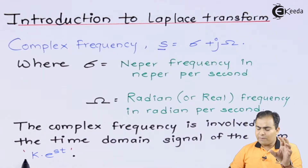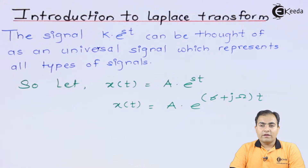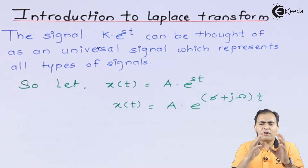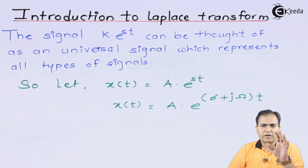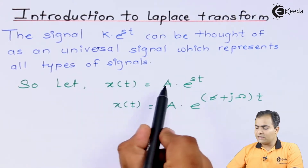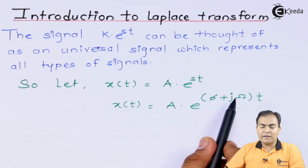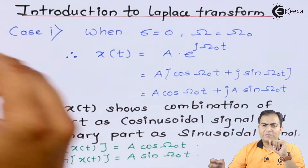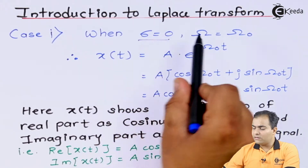How sigma and omega affect the operation of k·e^(ST) — let us prove it. We are going to substitute different values of sigma and omega. I have classified these operations into four different cases. Let us first substitute the S value. Here, X(T) = A·e^(ST), where A is the amplitude. S is substituted as sigma plus j·omega. In the first case, I have substituted sigma equal to 0 and omega equal to omega₀.